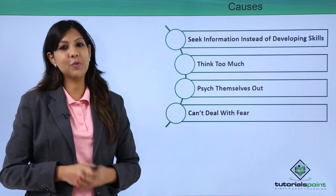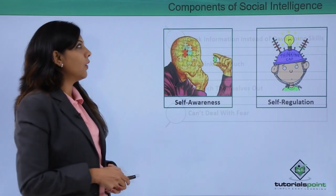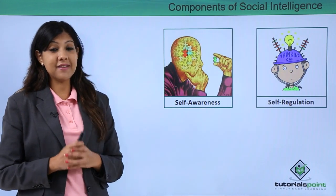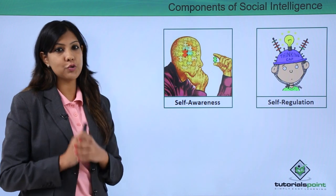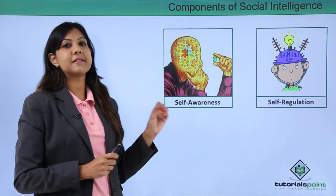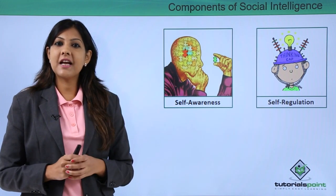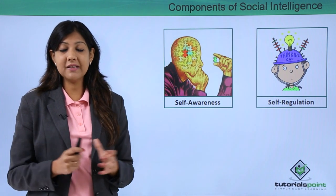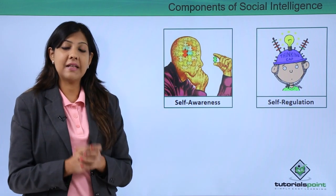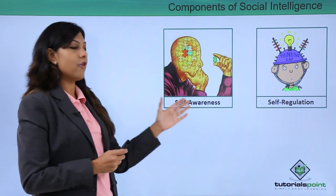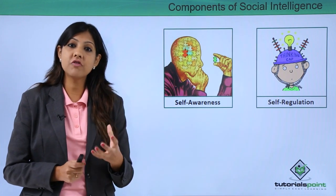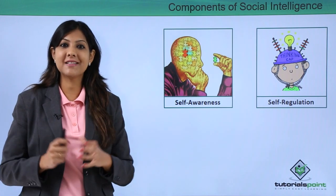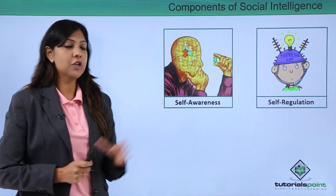Certain components of social intelligence are very essential to understand. The first is self-awareness — try to understand your strengths, weaknesses, and passions. When you are aware of yourself, you are more confident and come across to people as having high self-esteem. Always build time to know yourself.